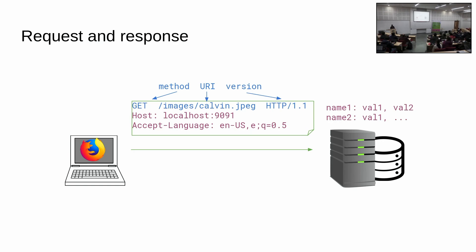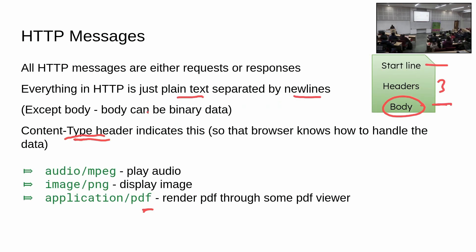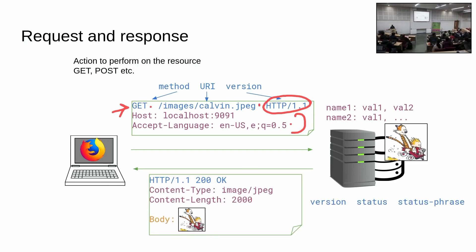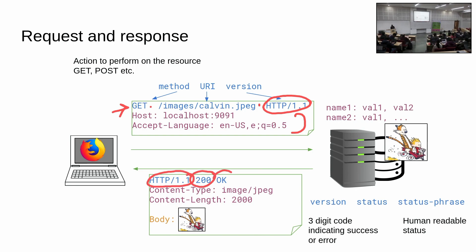For a request, the start line says: method (like GET), the path (URI), and the HTTP version. There are multiple methods — GET, PUT, etc. The response has the HTTP version, a status code, and a status phrase. You must have seen 200 for OK, 404 for not found. This status code tells the browser the result of the request.